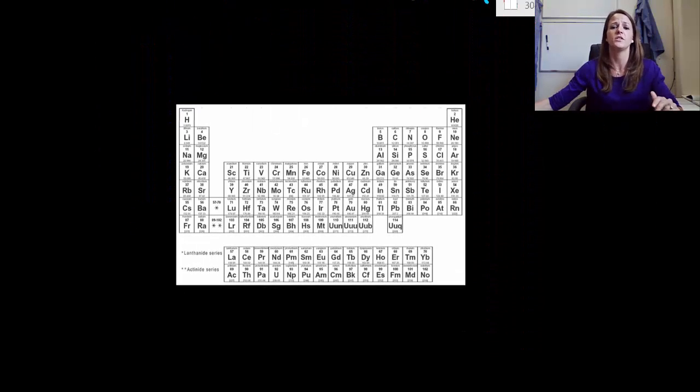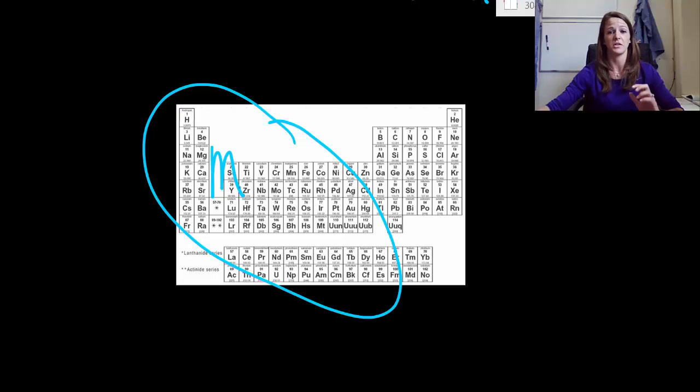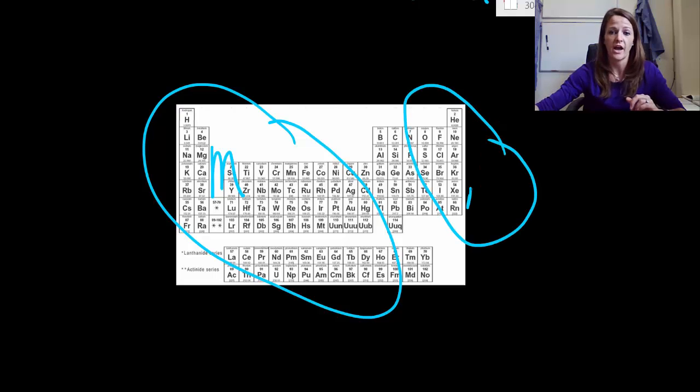So what I want to do right now is just look at the periodic table and review the three terms that we've already introduced. We decided that on this left side over here, we have our metals. These are typically solids. They're typically shiny. They might conduct electricity, and they might conduct heat. And then on our right side over here, we said that we have our non-metals. These are things that are most likely gases. Not always. There's a couple of liquids and solids in there. But they're mostly gases. They're not shiny. They typically cannot conduct electricity, and they definitely cannot conduct heat.